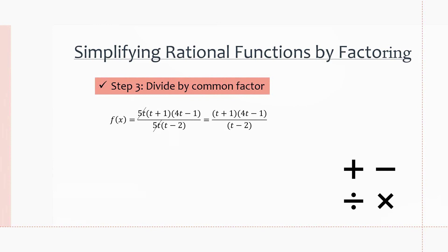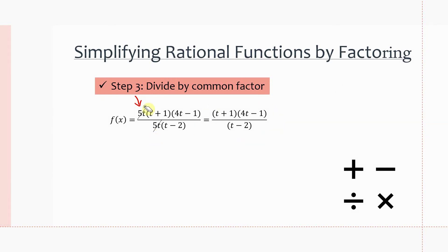For step 3, we simply cancel out any common factors. Here we cancel the 5t from numerator and denominator to get the simplified expression. When we do this, we find a hole — specifically, there is a hole at t = 0, because that factor was cancelled out. We'll cover holes in more detail in the next slide.